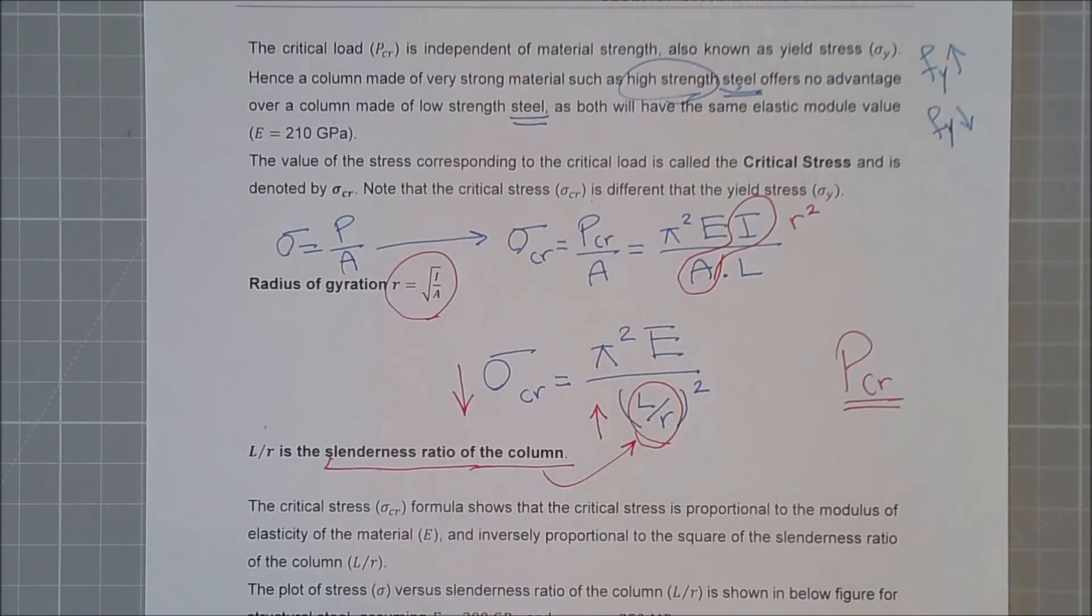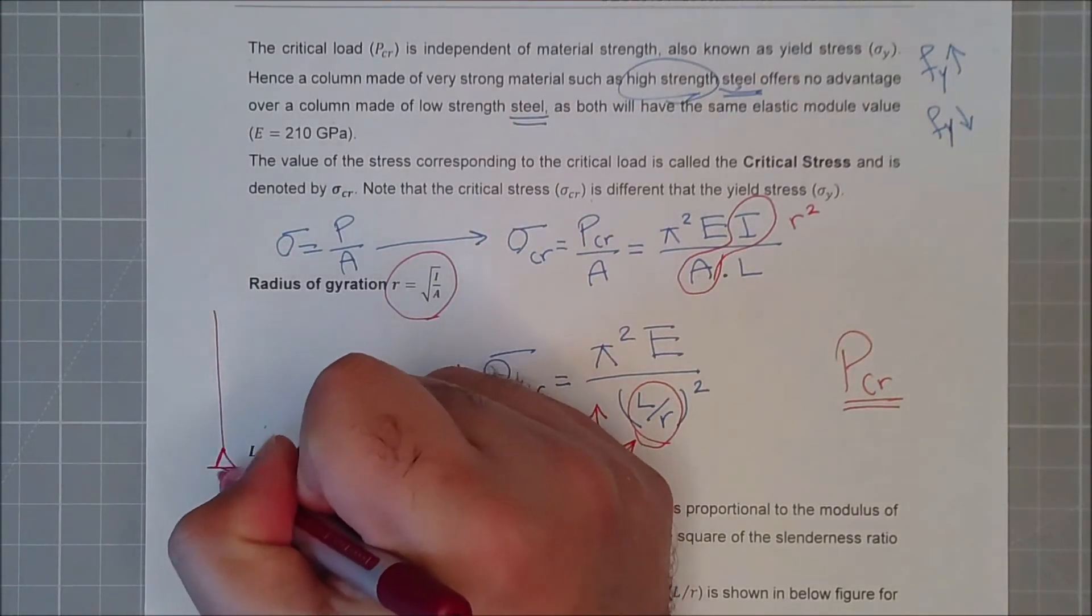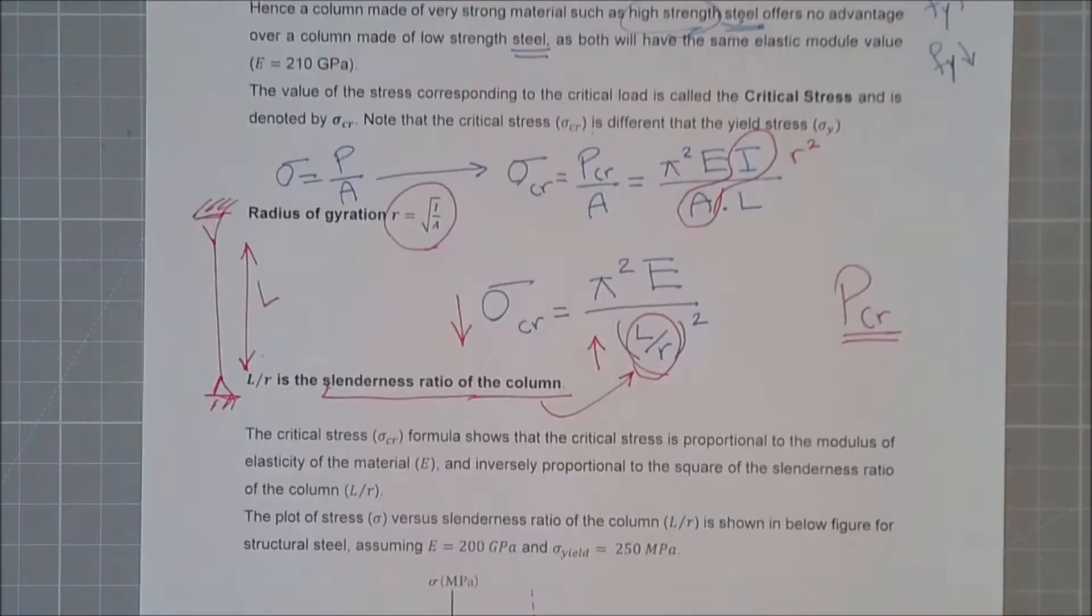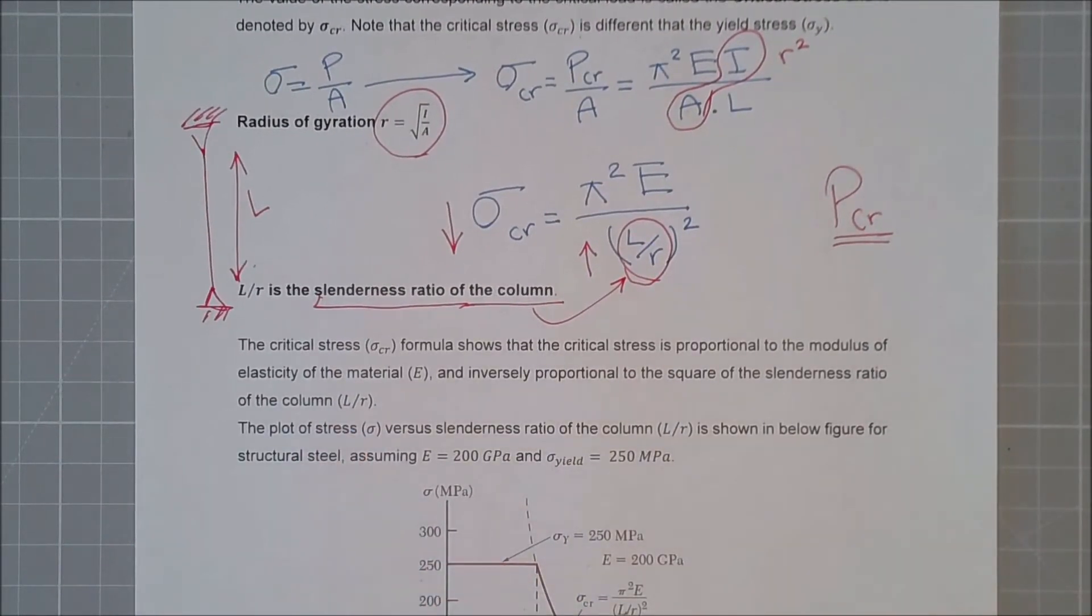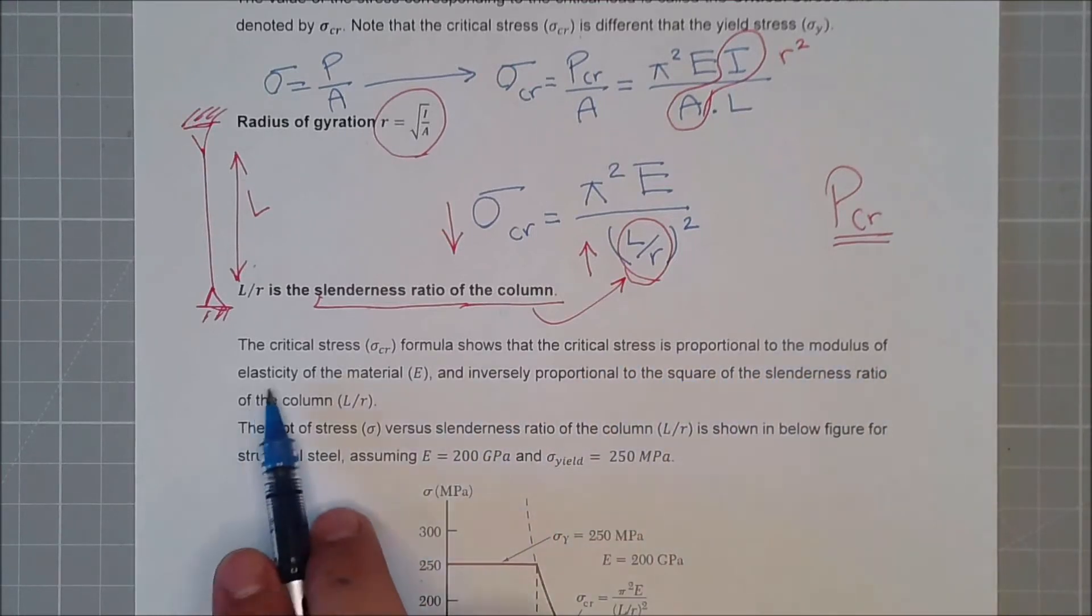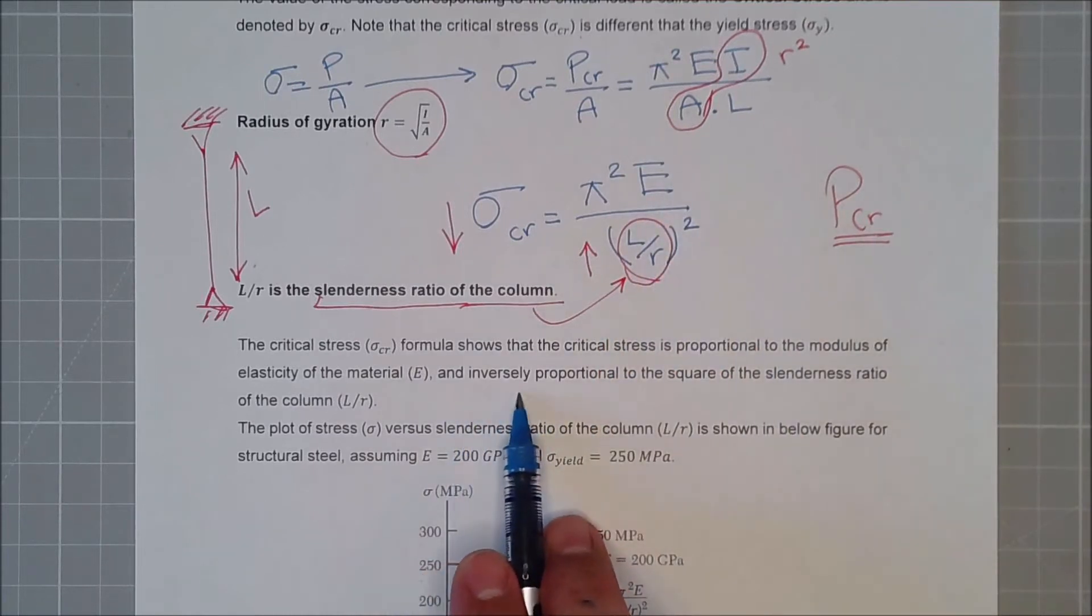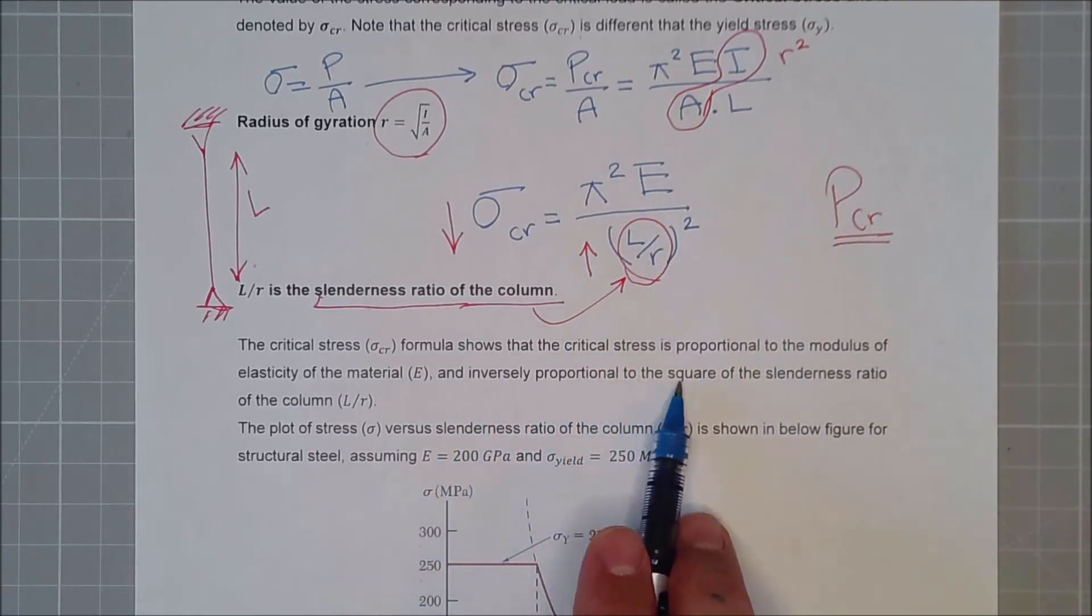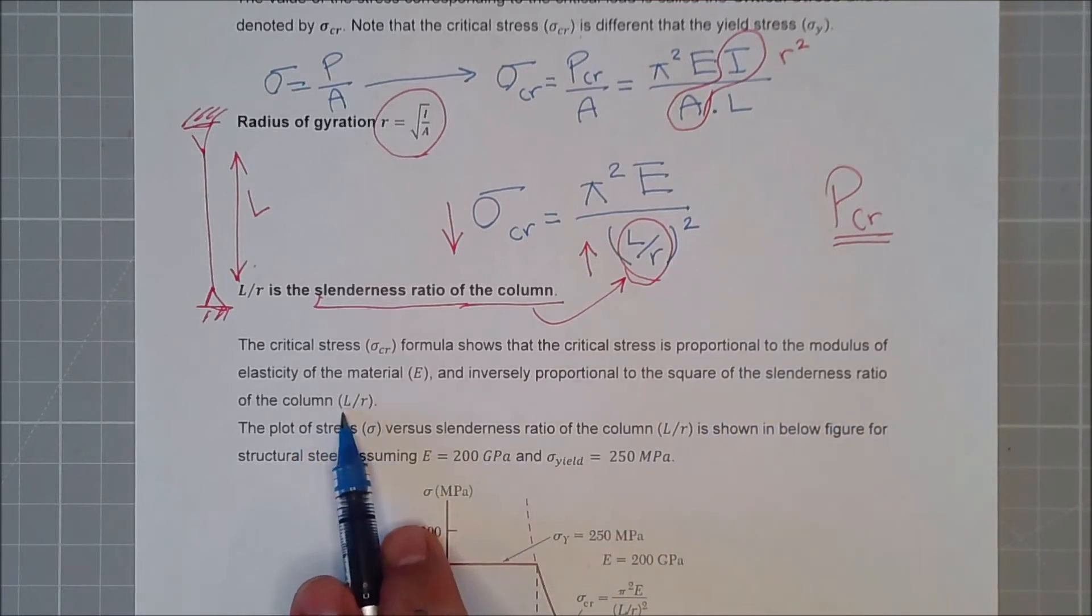And it makes sense because we were saying that buckling happens in slender and long columns. So from this, we can see that the critical stress formula shows that the critical stress is proportional to the modulus of elasticity of the material, so E.